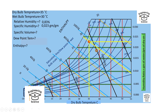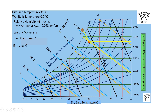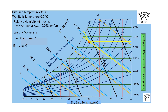For specific volume, the black lines represent specific volume. We draw a line parallel to the specific volume lines. This value is between 0.90 and 0.85, so it is about 0.89 cubic meters per kilogram. That is the answer for specific volume.